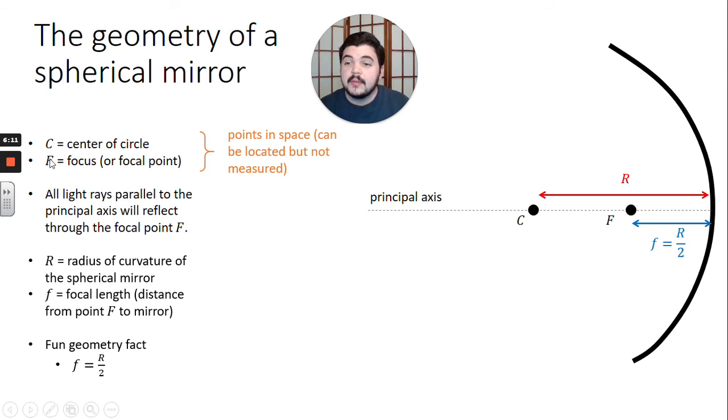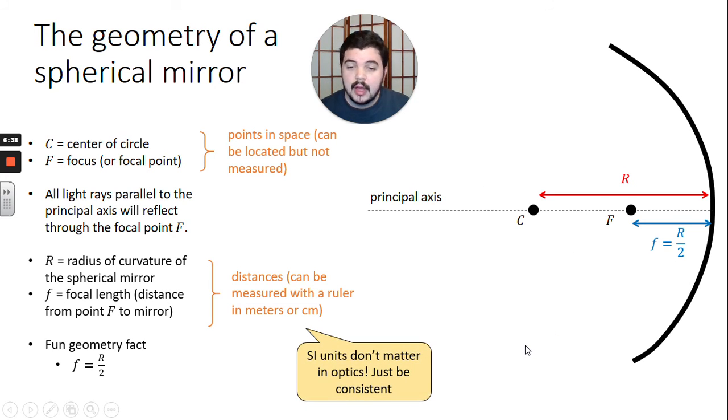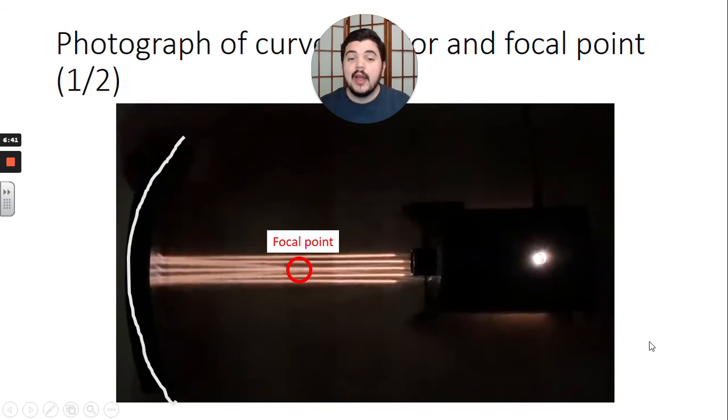So the capital letters up here, these are points in space so that they can be located, but they can't be measured. And then the lowercase letters, the capital R and the lowercase f, those are distances. We can grab ourselves a ruler, we can measure those in meters or centimeters. Fun fact about a lot of the spheres and lenses stuff that we're doing next: you don't need to use SI units. Centimeters, inches, all of those are fine, so long as you're consistent in the units that you are using. So SI units don't matter, just be consistent.